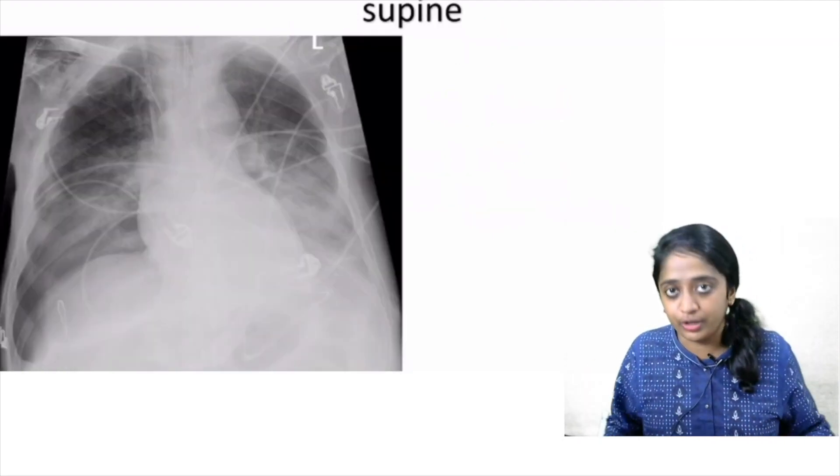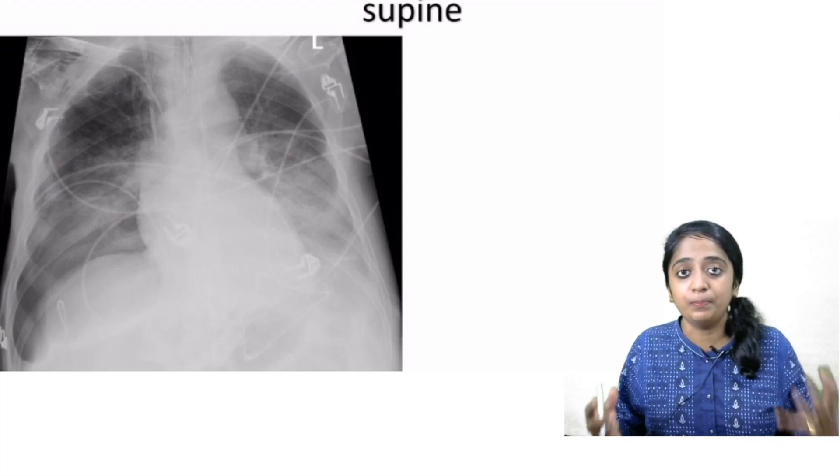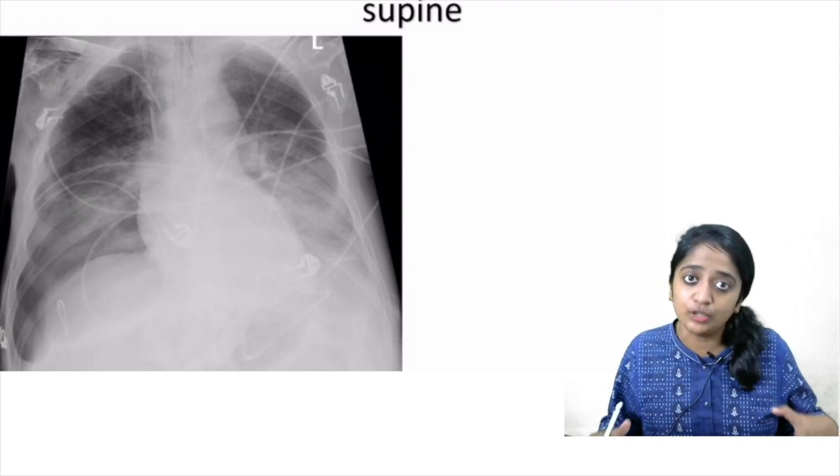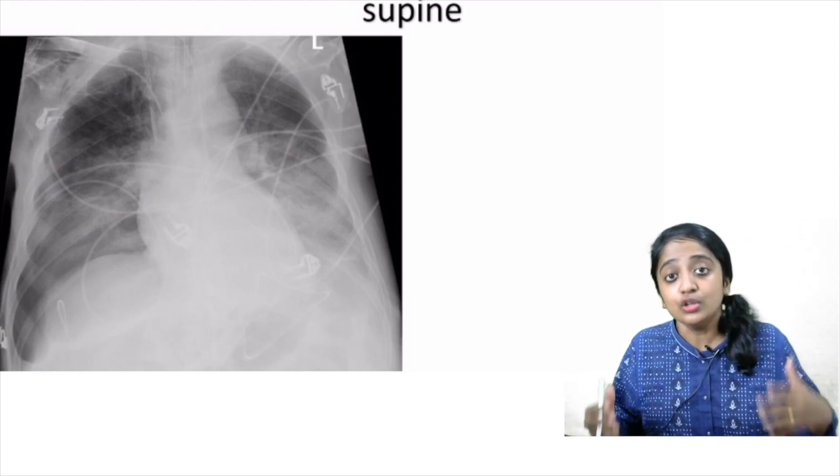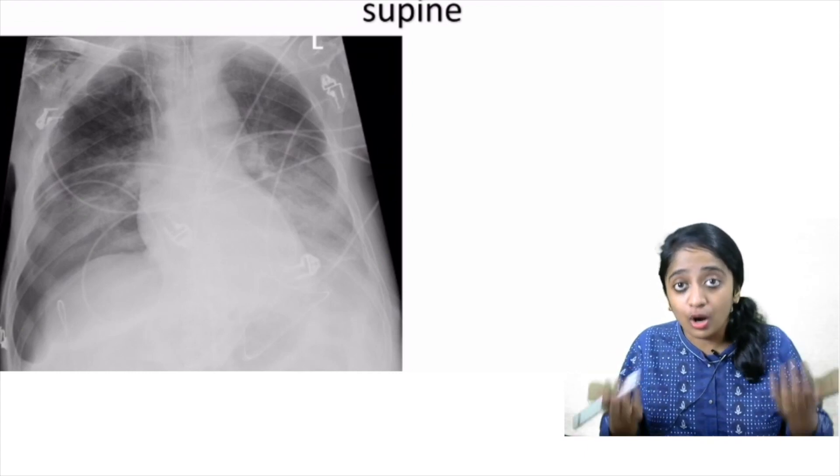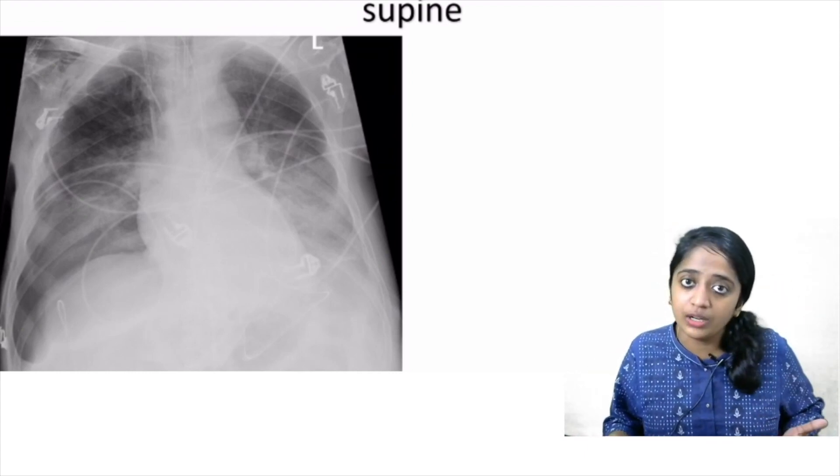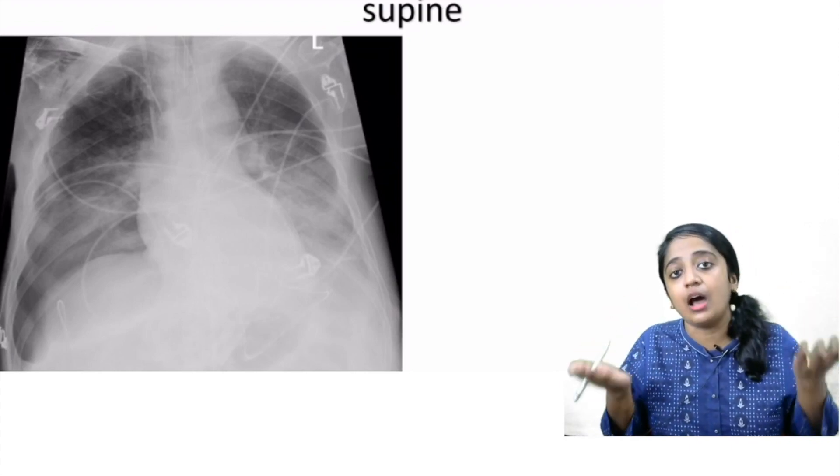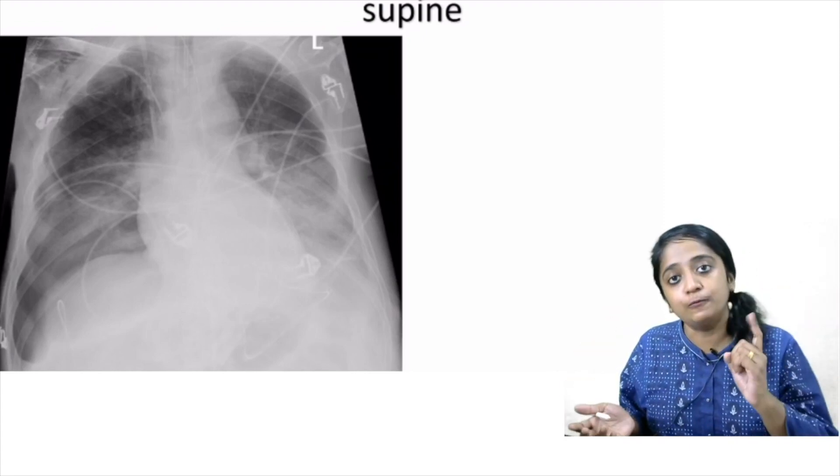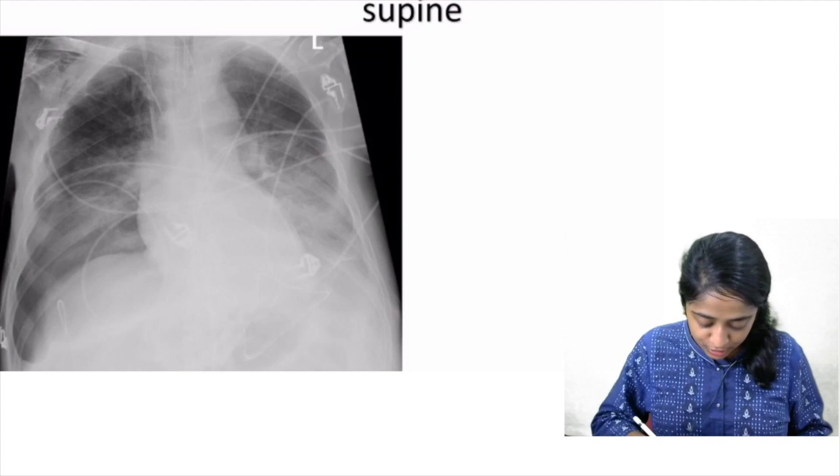Now coming to supine radiograph. As I said in supine radiograph, what is the problem? The patient is too sick to be positioned erect. So supine radiograph, you are going to expect air in the non-dependent position. So where is the non-dependent position? It is an anterior upper aspect. So you have to look for signs. So this is the first feature that you can look for.